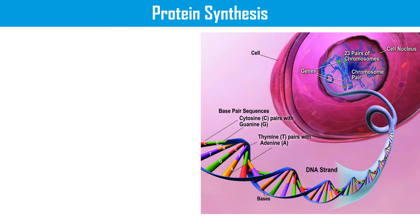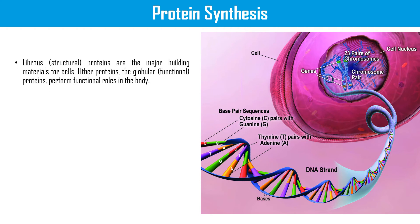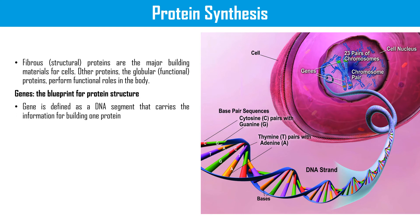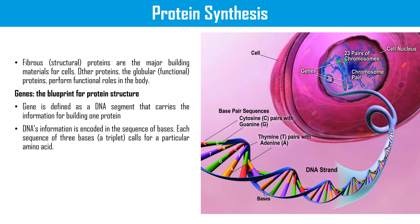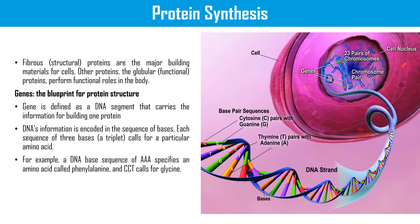Moving on to protein synthesis. Fibrous structural proteins are the major building material for cells. Other proteins, globular functional proteins, perform functional roles in the body. A gene is defined as a DNA segment that carries the information for building one protein. DNA's information is encoded in the sequence of bases. Each sequence of three bases, called a triplet, codes for a particular amino acid. For example, a DNA base sequence of AAA specifies the amino acid phenylalanine, and a DNA base sequence of CCT codes for glycine.